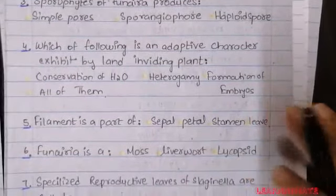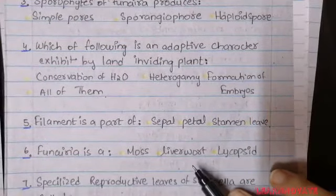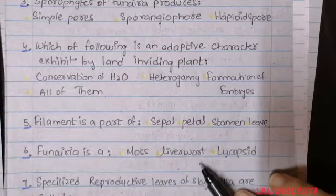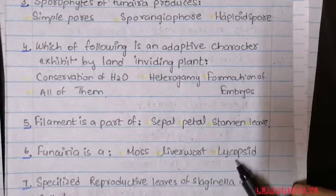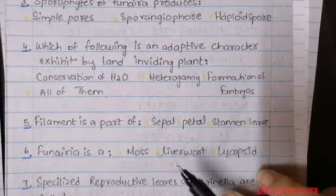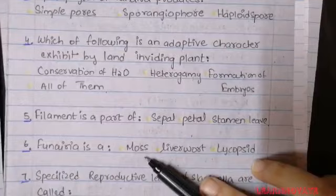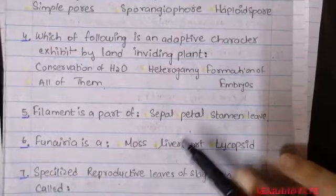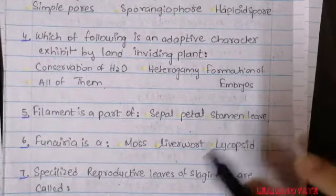Question 6: Funaria is — A. A moss, B. A liverwort, C. Lycoopsida. Funaria is an example of a moss. So option A for question number 6 is correct.